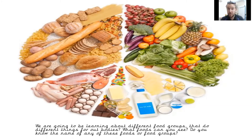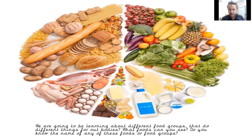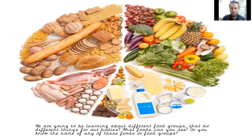I can see some milk as well. I can see a fish, a banana and a pineapple, and some bread and some pasta, some eggs. Has anyone spotted the Skittles? Can you see the Skittles on there? Fantastic. Now, these are all split up into different types of food groups.